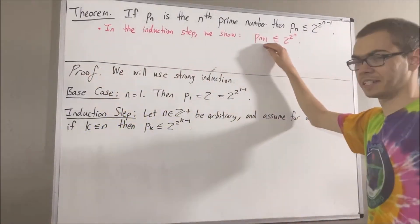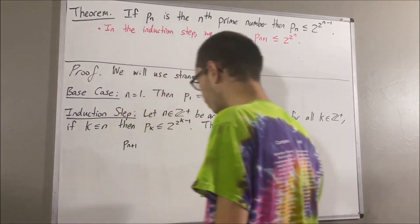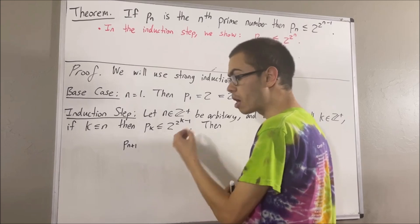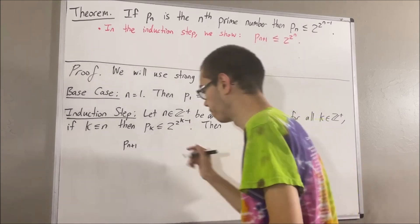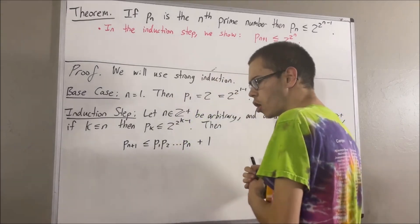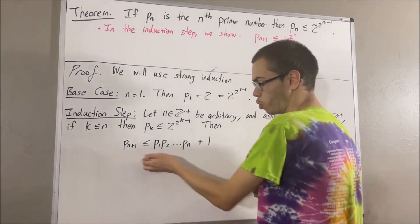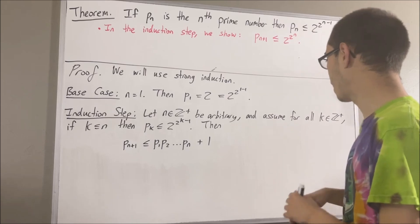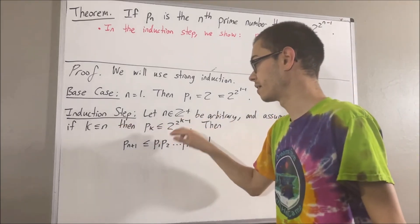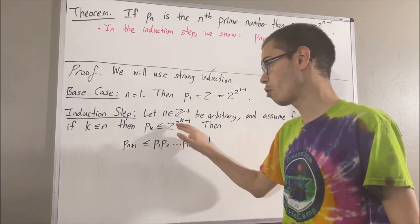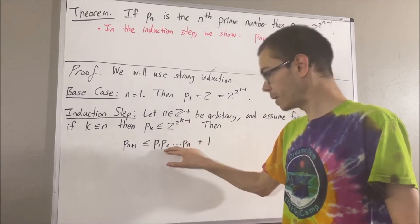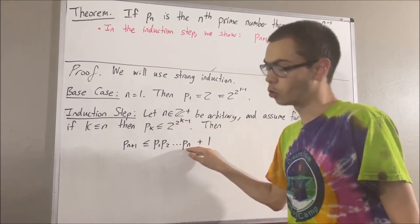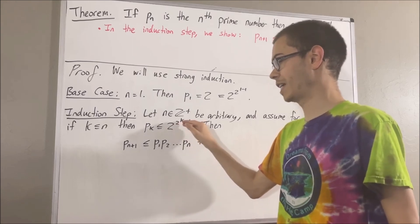Let's start by writing the left-hand side. It turns out that the (n+1)th prime number is less than or equal to the product of the first n prime numbers plus 1. I'll leave a link in the description proving this. By the induction hypothesis, P1 is less than or equal to 2 to the power of 2 to the 1 minus 1, P2 is less than or equal to 2 to the power of 2 to the 2 minus 1, and so on up to Pn, which is less than or equal to 2 to the power of 2 to the n minus 1.